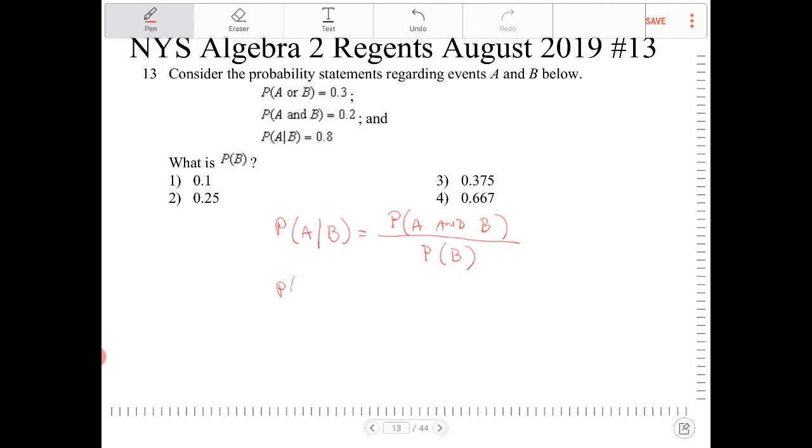If it was the other way around, probability of B given A, then it would be the other way around. It would be A and B over probability of A.